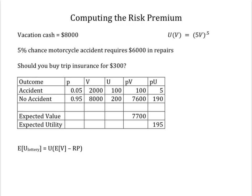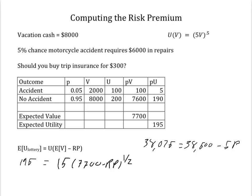The difference between the $395 you'd be willing to pay and the actuarially fair $300 is called the risk premium. In general, the risk premium is the amount we need to reduce the expected value so that the utility with certainty equals the expected utility of the lottery. Here, the expected utility of the lottery is 195. So we get the square root of 5 times (7,700 minus RP). Squaring both sides, we get 38,025 equals 38,500 minus 5RP, or RP equals 475 over 5, which equals 95. So you'd be willing to pay $95 above the expected loss, or a maximum of $395, to avoid the risk of having your vacation ruined.